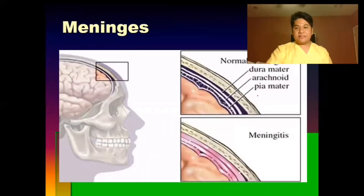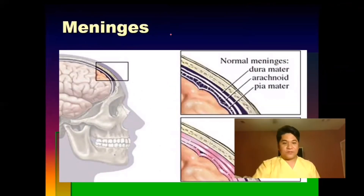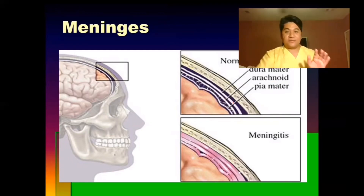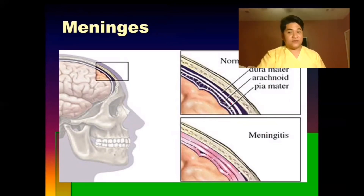The meninges are the coverings and protection of your brain, divided into the dura mater, arachnoid, and pia mater. These coverings support and protect the brain. If viruses or bacteria enter the brain, they attach to this part and cause inflammation, leading to meningitis.